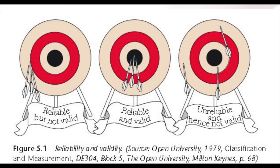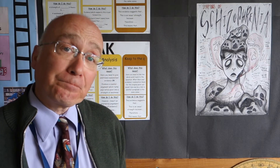On the left we have a test which is reliable but not valid — it's getting the same incorrect answer every time. So high reliability is not a guarantee of validity. On the right we have the case where it's neither reliable nor valid. If it's not giving the same answer every time, then it can't be a valid test.